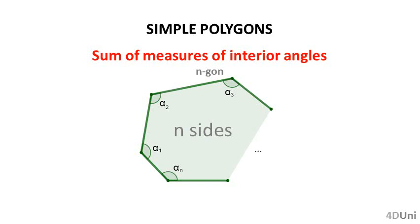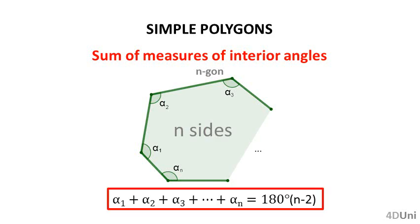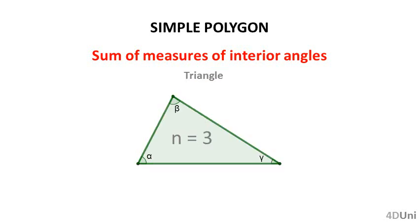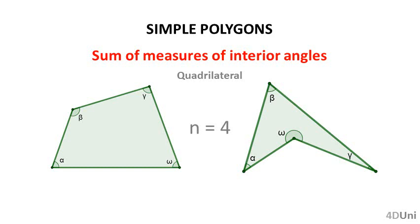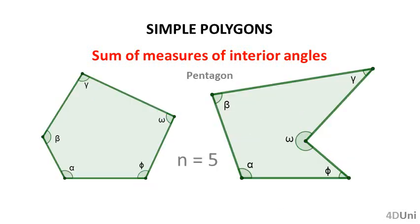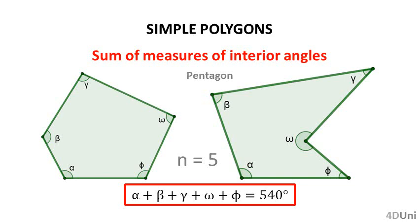An important formula in simple polygons is used to calculate the sum of the measures of all interior angles. For a generic simple polygon of n sides, that sum equals 180 degrees times (n minus 2). For instance, a triangle has 3 sides, so n minus 2 is 1 and the sum is 180 degrees. Quadrilaterals have 4 sides, so the sum is 360 degrees. Pentagons have 5 sides, so n minus 2 is 3 and the sum is 540 degrees.